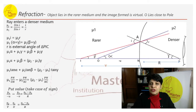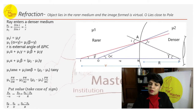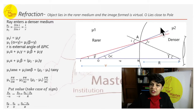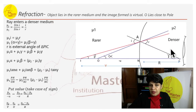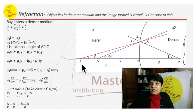Case 2: the object lies in the rarer medium and the image formed is virtual. This is because the object O is placed close to the pole. If placed close to the pole, or if the curvature is less, the ray entering from rarer to denser medium forms a virtual image on this side.